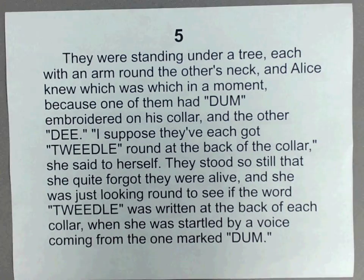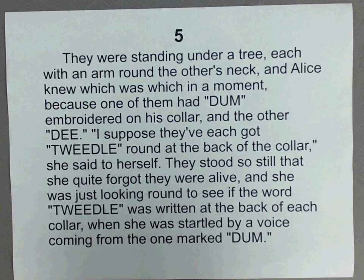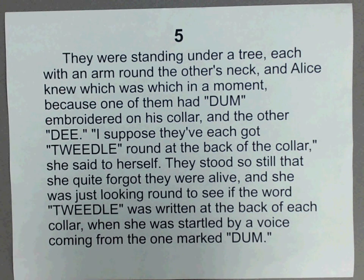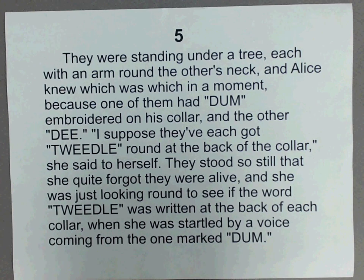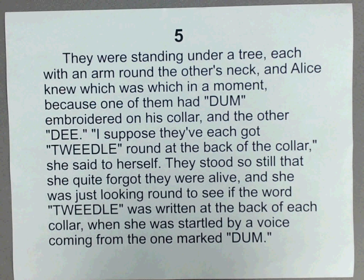Last one, number five: "They were standing under a tree, each with an arm around the other's neck. And Alice knew which was which in a moment, because one of them had 'Dum' embroidered on his collar, and the other 'Dee.' I suppose they've each got 'Tweedledee' round at the back of the collar, she said to herself. They stood so still that she quite forgot they were alive, and she was just looking around to see if the word 'Tweedled' was written at the back of each collar, when she was startled by a voice coming from the one marked Dum." Try and figure out your answer.